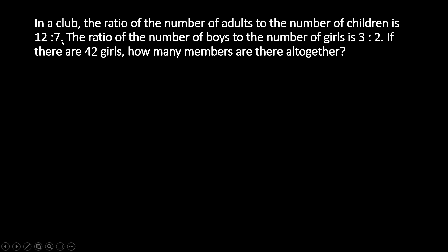There are two levels of ratio used here, but this question is quite simple. It's deceptively simple because it looks a bit difficult but it can be easily solved. Because we know one quantity here which is the number of girls. We know that there are 42 girls and that ties us with this ratio — boys is to girls is 3 is to 2. So we are going to start from here.